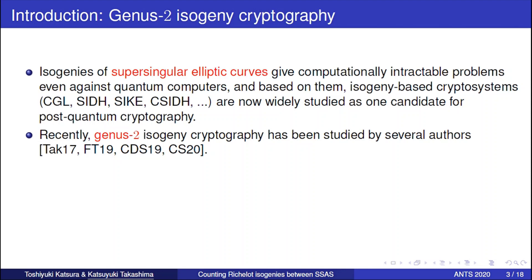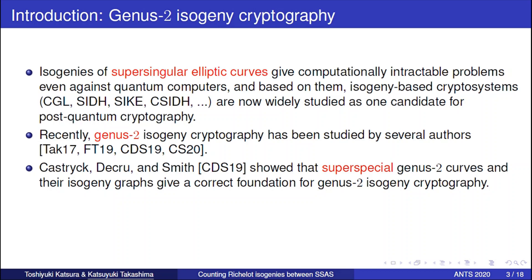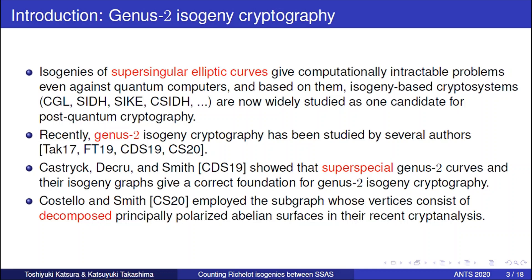As a natural research direction, recently genus-2 isogeny crypto has been studied by several authors including me. Especially Katsura, Deguru, and Smith showed that super-special genus-2 curves and their isogeny graphs give a correct foundation for genus-2 isogeny crypto. And more recently, Costello and Smith employed the subgraph whose vertices consist of decomposed principally polarized abelian surfaces in their recent cryptanalysis. So analyzing such graph structure is important in cryptography.